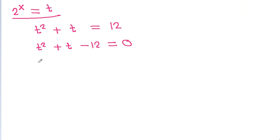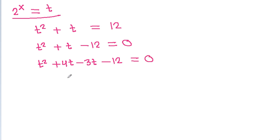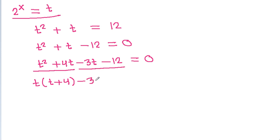Factoring: t squared plus t minus 12 equals t squared plus 4t minus 3t minus 12, which is t times (t plus 4) minus 3 times (t plus 4) is equal to 0.